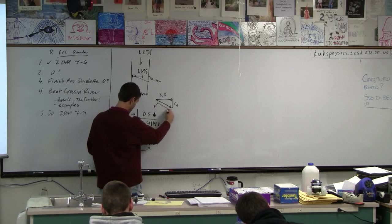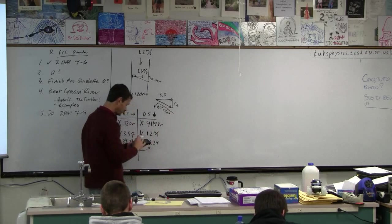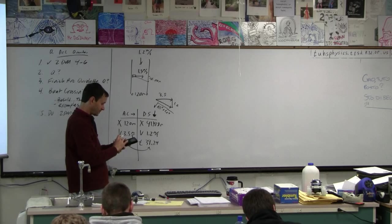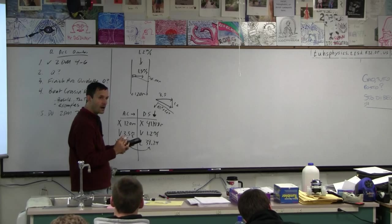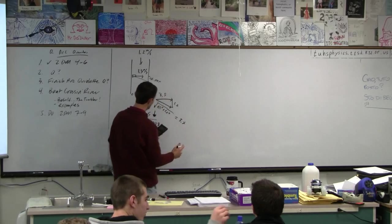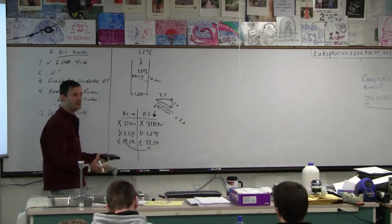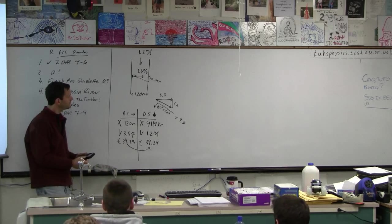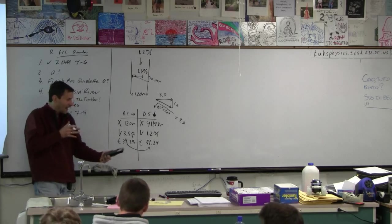Pythagorean. Pythagorean, right? 3.5 squared plus 1.2 squared. 3.5 squared plus 1.2 squared. 3.7 exactly. How could it be exact? Because it's a 1.2, 3.5, 3.7 right triangle. Yeah, you know about those, right? How is that possible? Ah! Okay.